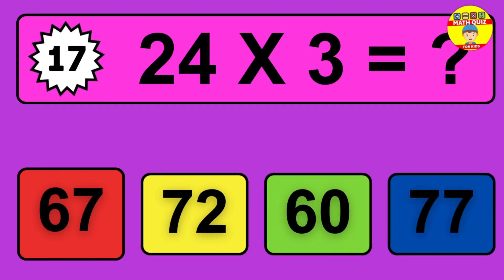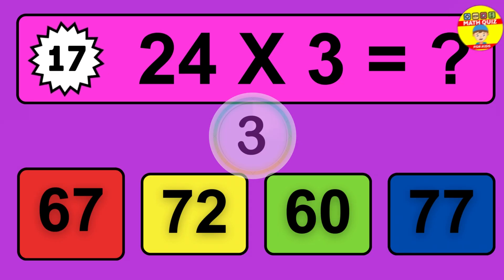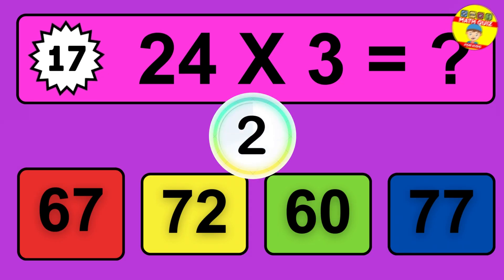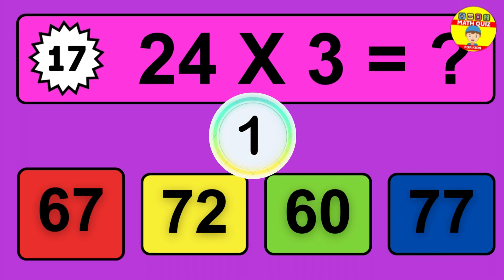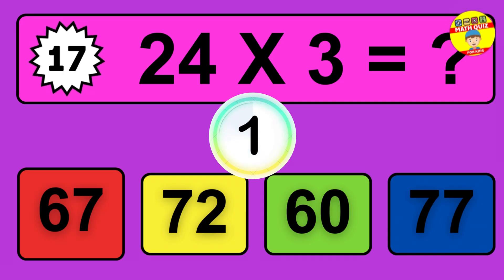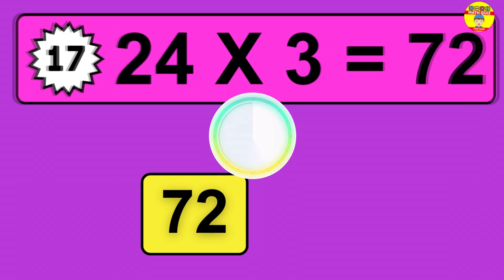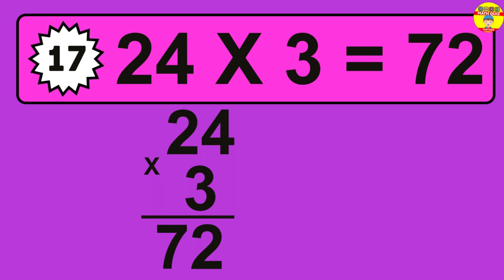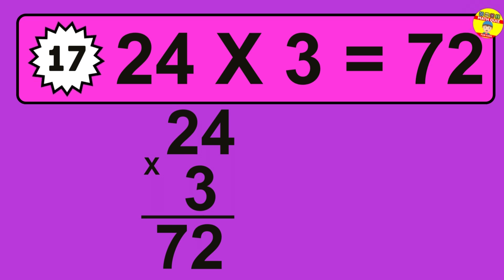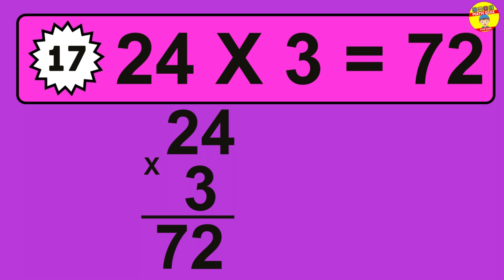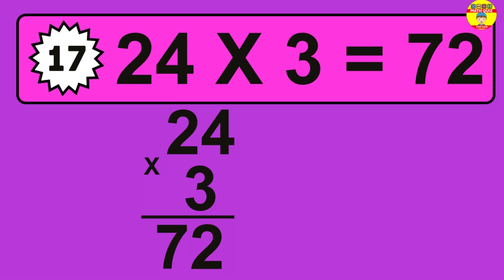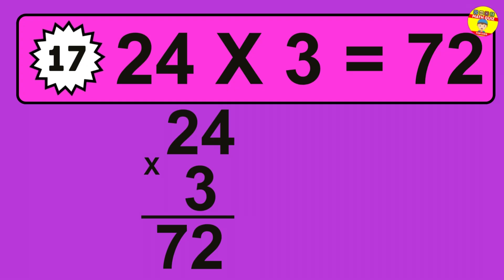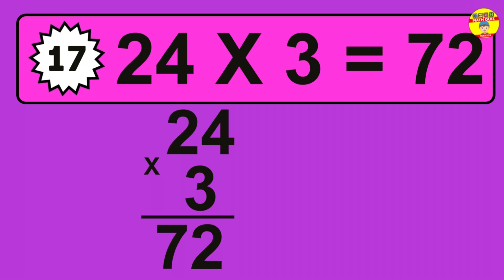Question 17. 24 times 3 equals what? The answer is 24 times 3 is 72. To calculate, we have 24 groups with 3 balls each one. So, how many balls do we have? 72 balls.